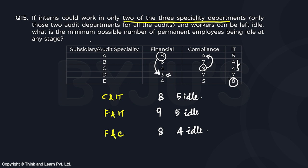The minimum possible number of permanent members that can be idle at any stage is four. Since it's a TITA question, we type in four.